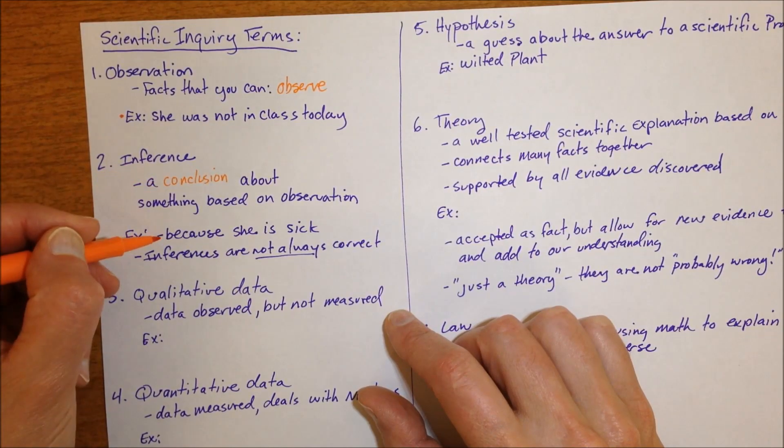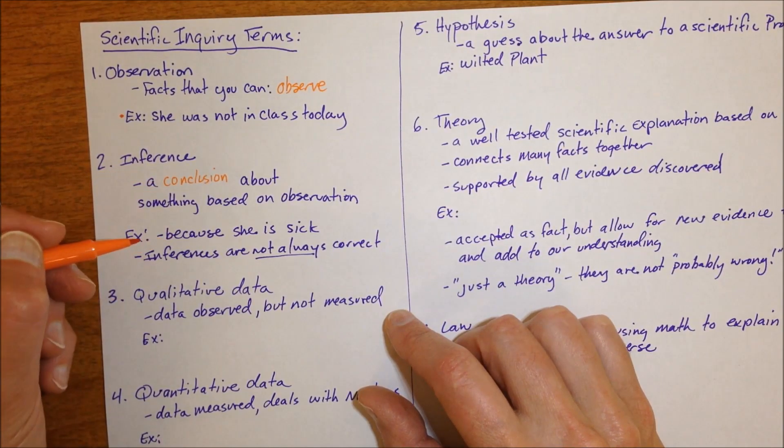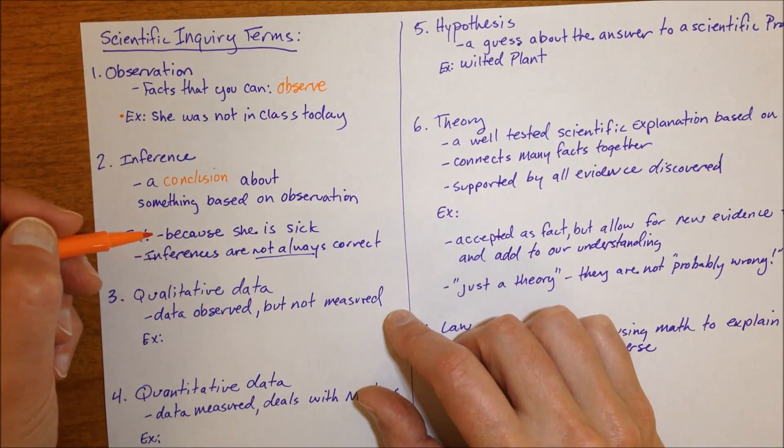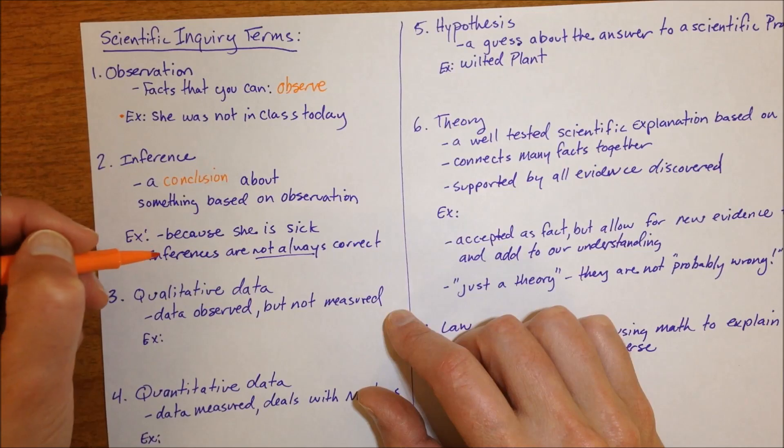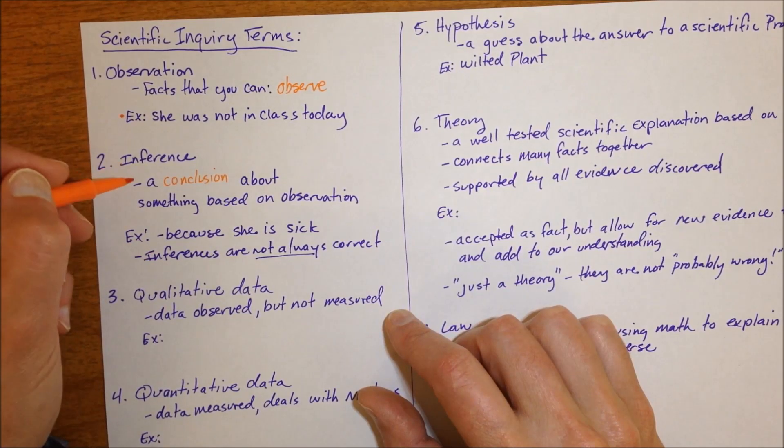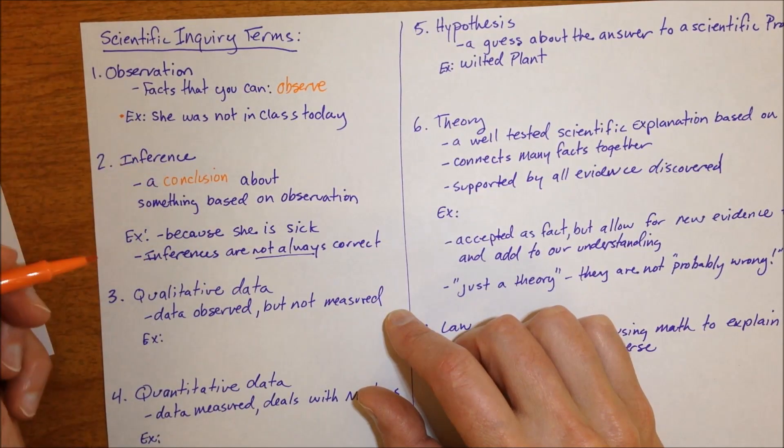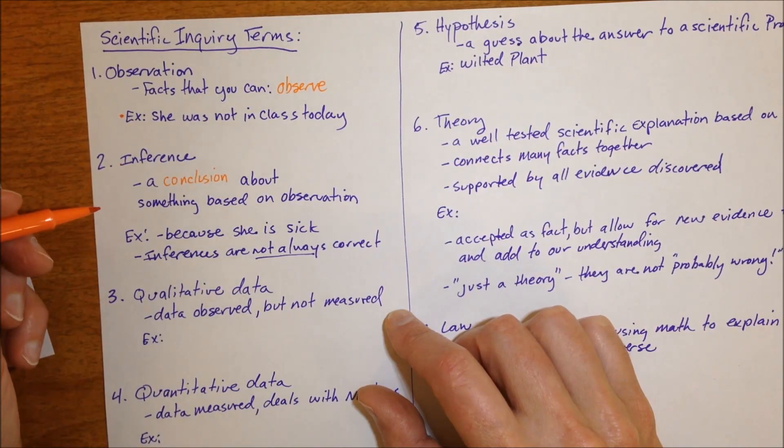Not all of our inferences are correct. She actually might be out of class today because she overslept or she might be out of class today because she went out to lunch with a friend. But inferences are attempts to make conclusions about data that we have under observations.